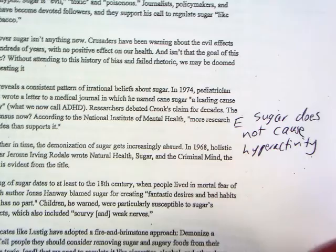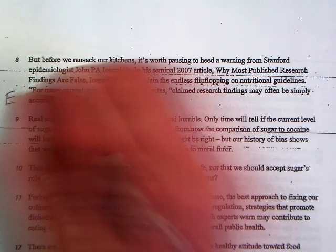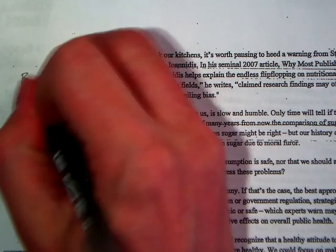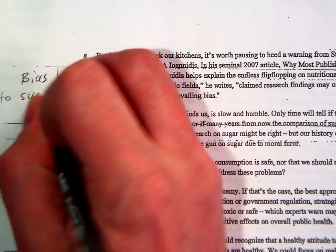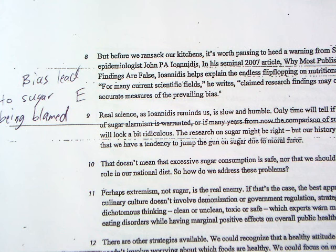Another piece of evidence you could use is here on the back, at the end of paragraph eight. We're looking at some ethos — a guy from Stanford who is an epidemiologist, a pretty fancy degree. The last line is good evidence. He says, 'For many current scientific fields, claimed research findings may often be simply accurate measures of the prevailing bias.' This is saying that research is affected by bias and can't be trusted. The evidence here is that bias led to sugar being blamed. These two pieces could be the cornerstone of your argument.